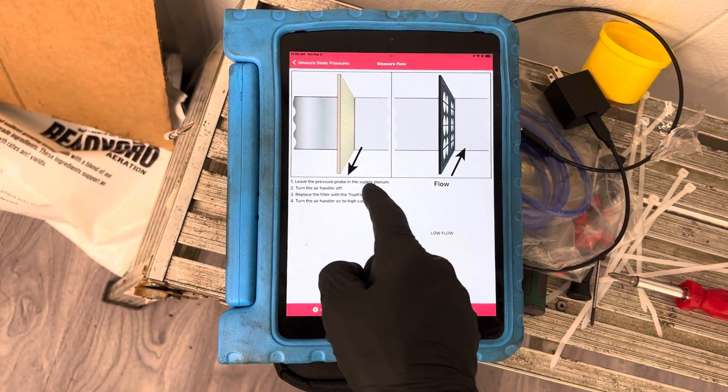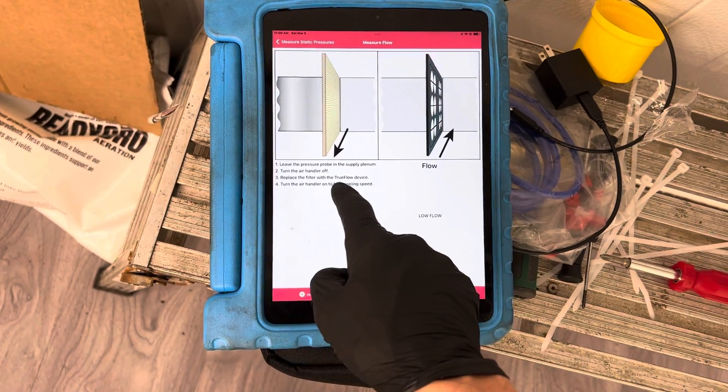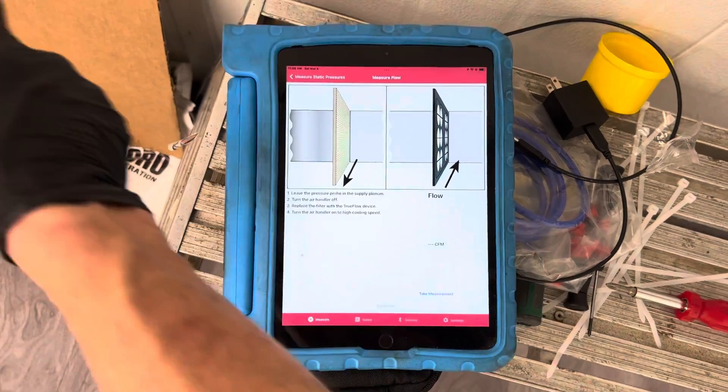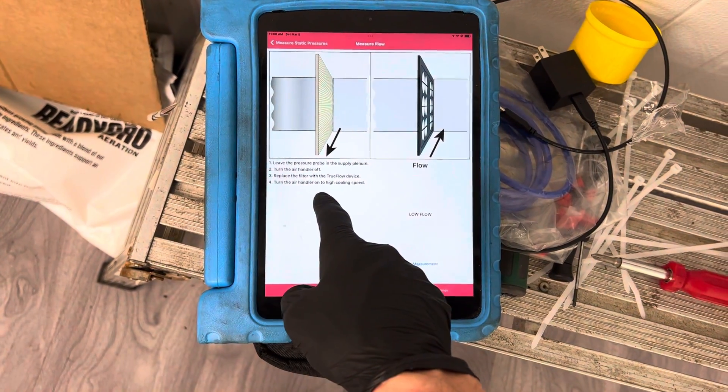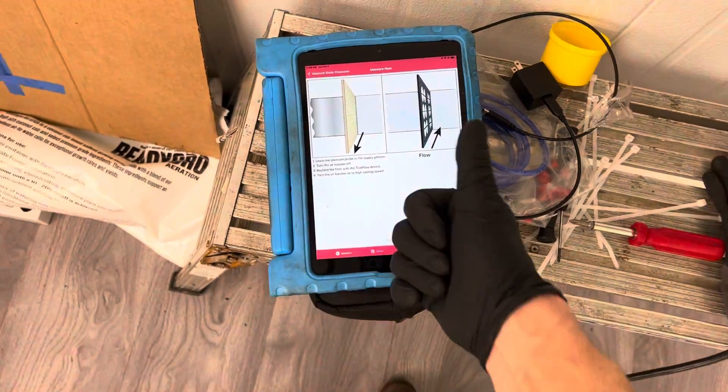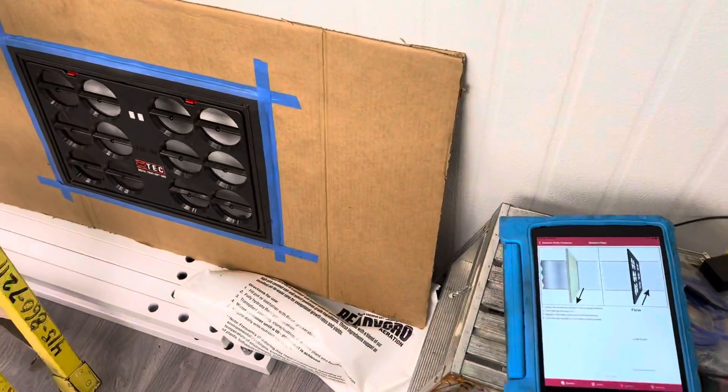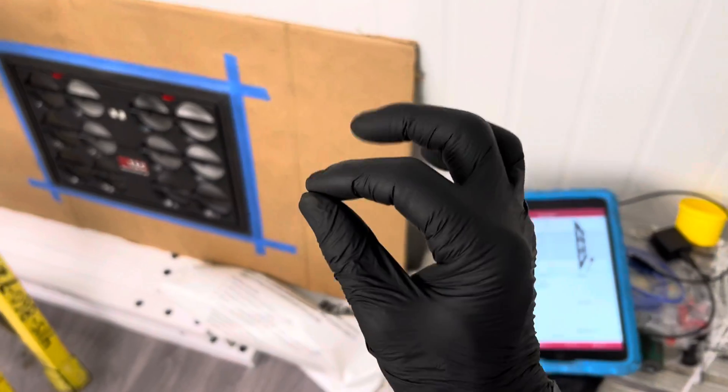Now it says leave in the pressure probe, turn the air handler off, replace the filter with the true flow grid device—that's that device right there—and turn the air handler on high cooling speed. Real simple, it's not rocket science. Anybody can do this. It's so much better than traversing with the fans or doing a pitot tube traverse.